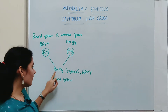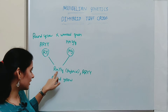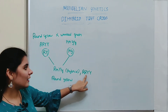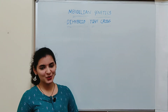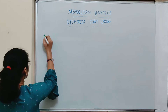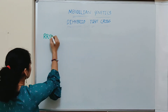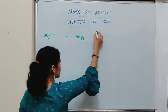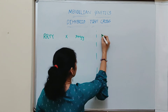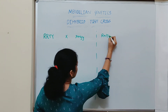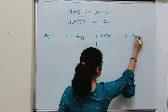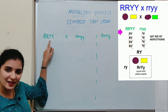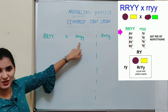There are two possibilities. One possibility is that the plant is hybrid, with genotype RrYy. Another possibility is that the plant is homozygous dominant, with genotype RRYY. We will write the two possibilities separately and do the test cross one by one — first, crossing the homozygous dominant parent with the double recessive parent.